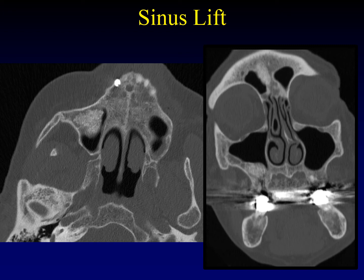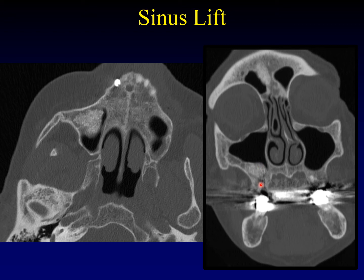Another procedure you may encounter is the sinus lift operation. If you want to put in dental implants, you need sufficient thickness of the maxillary alveolus — usually about a centimeter — to anchor those implants. If you don't have enough bone, you can lift up the sinus mucosa, stuff some bone graft underneath it, and lay the mucosa back down on top of the grafted bone. The bone will mature, artificially increasing the thickness of the alveolus so you can place the dental implant. Here's what that mature bone looks like on axial and coronal images, and you can see how it's thickened the alveolar ridge to incorporate and allow for the dental implant.